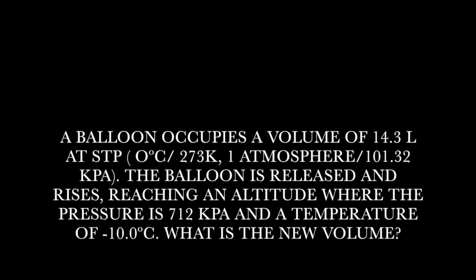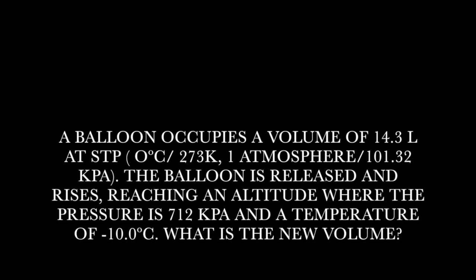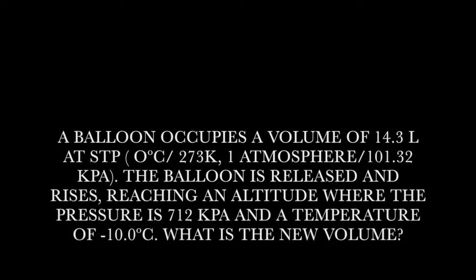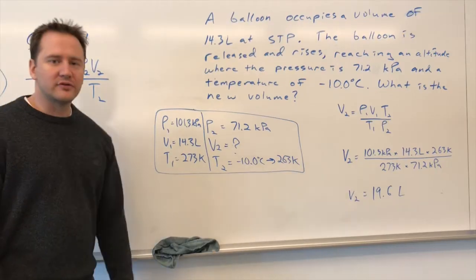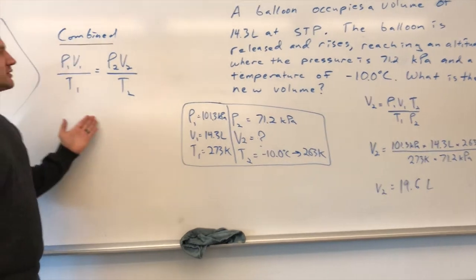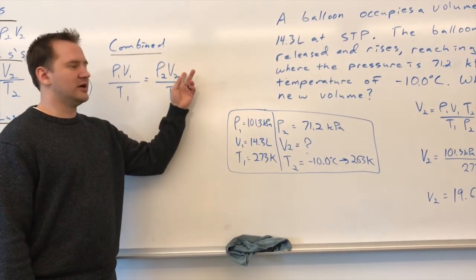You release the balloon, it reaches an altitude where the pressure is 71.2 kPa, and it has a temperature of negative 10 degrees, and what would the new volume be? So what we have to do here is we're going to rearrange the combined gas law to solve for the final volume.